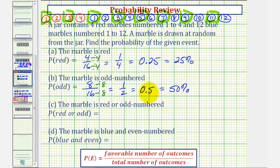Remember to convert from a decimal to a percent, we multiply by 100 and add a percent sign, which is the same as moving the decimal point to the right two places. Now this next probability is probably the most challenging one.